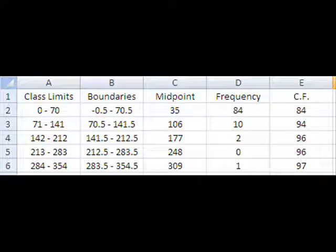To create your limit, start with the smallest number, 0, and add your width, 71, as you move down through each column. To create your boundaries, move 0.5 below the lower limit and 0.5 above the upper limit for each class.